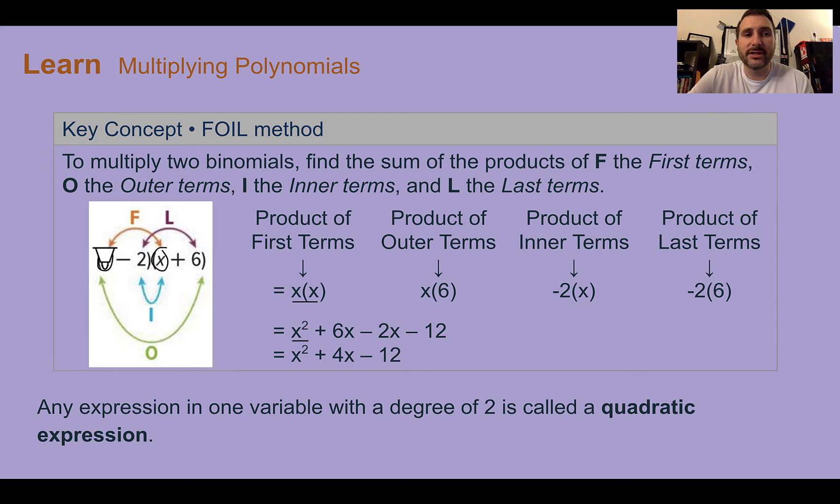Then we're going to do the outside terms. So x and 6 would give us 6x. I, for the inner terms, negative 2 times x is negative 2x. And then our last terms, the L, negative 2 times 6, is negative 12. With this method, most likely you're still going to have to combine the two terms from your O and your I, your inner and your outer, into one final simplified expression.